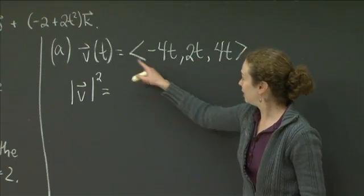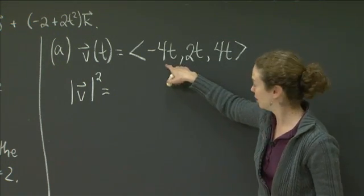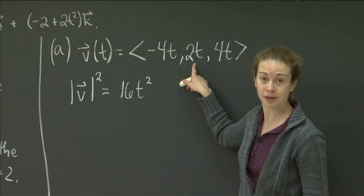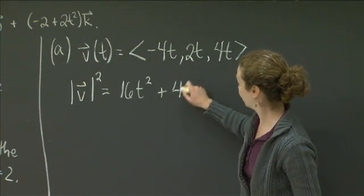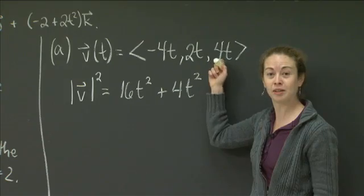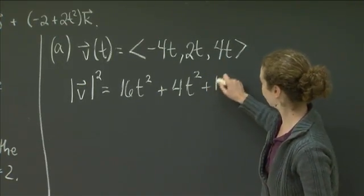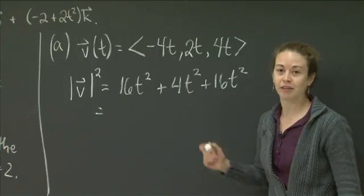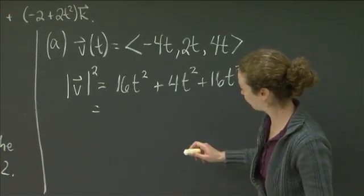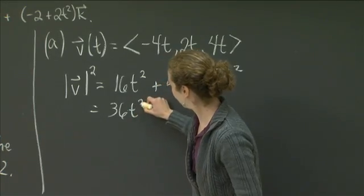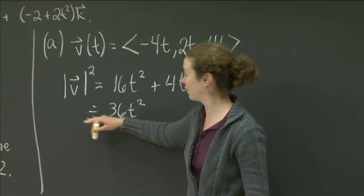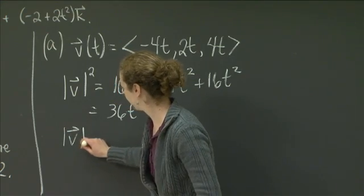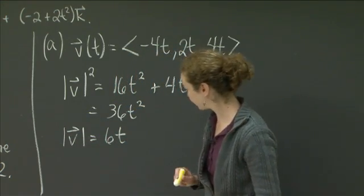So v dotted with v, the first component I'm going to have negative 4t quantity squared, so that's going to be 16t². And then the second component is going to be 2t quantity squared, so I'm going to have plus 4t². And the third component is going to be 4t quantity squared, so I get another 16t². So when I add those up, I believe I get 36t². Yes, good. And so then I just have to take the square root of both sides to get what the speed actually is instead of the square of the speed. So I get 6t.